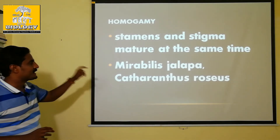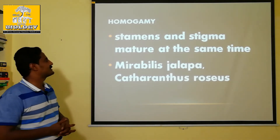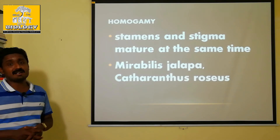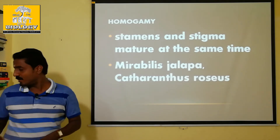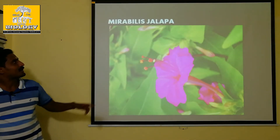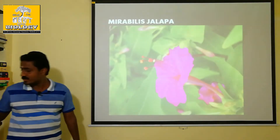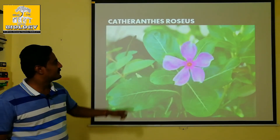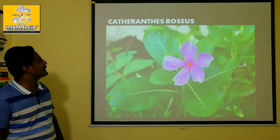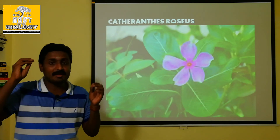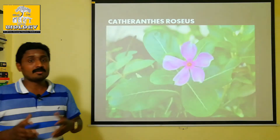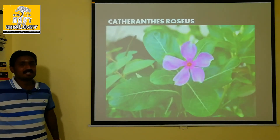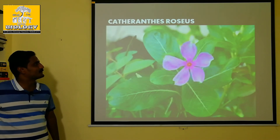Mirabilis jalapa and Catharanthus roseus (also called Nithyakalyaani) are examples of Homogamy. In Catharanthus roseus — Nithyakalyaani — you can observe the plant clearly. In these plants, the stamen and stigma mature at the same time, facilitating self-pollination.